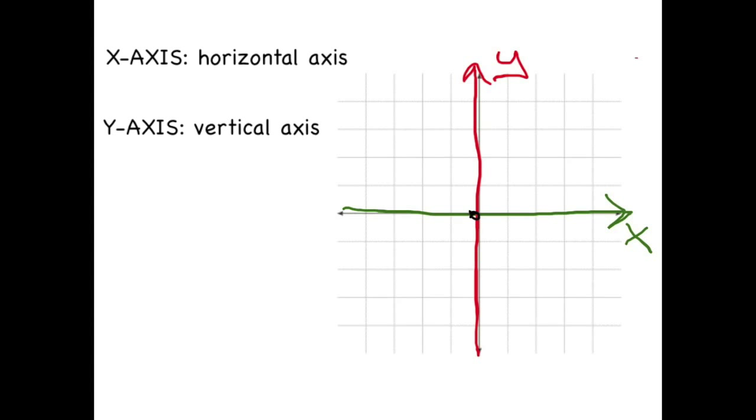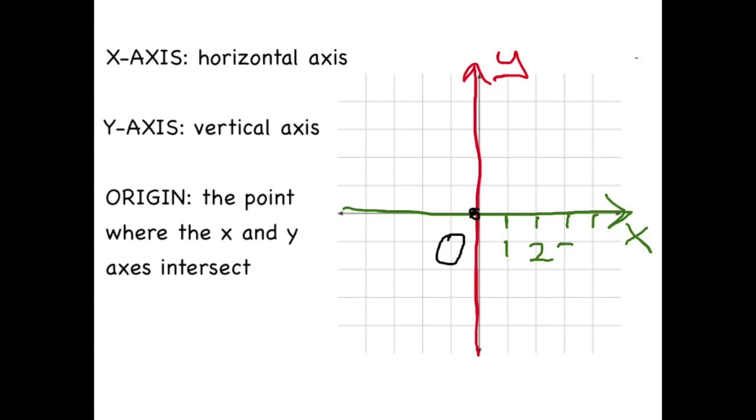And the point where the X and Y axes intersect is known as the origin. Starting from the origin, numbers are written along the axes at regular intervals. Each number corresponds to a line on the grid. On this coordinate plane, we're going to increase by intervals of one.